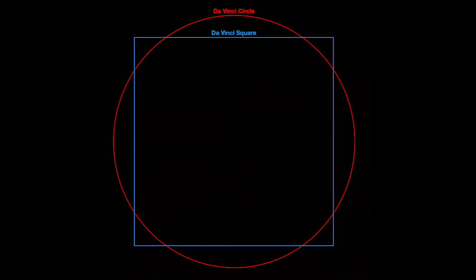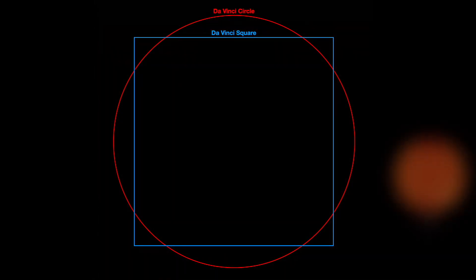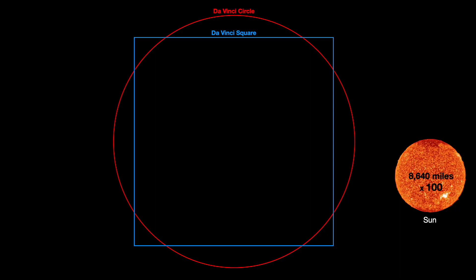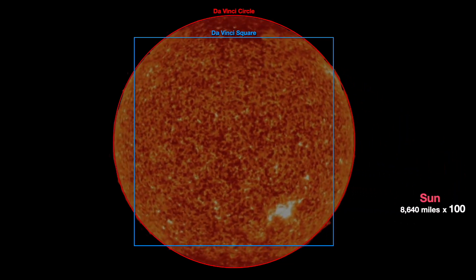Robert Edward Grant has intuited that perhaps that outer circle is mimicking the sun's diameter of 8,640 miles times 100, for it measures 8.64 inches on the actual document.